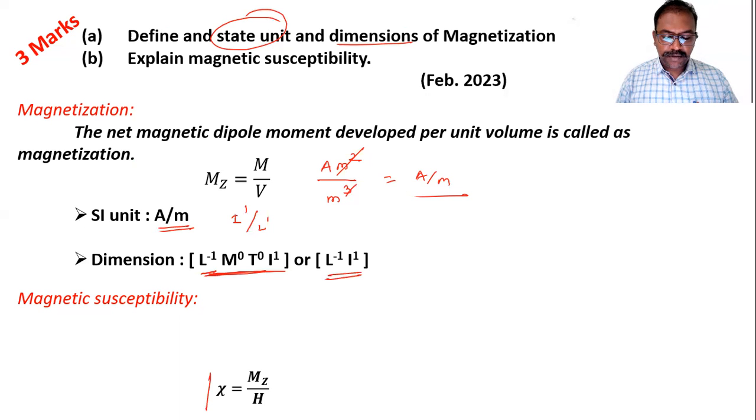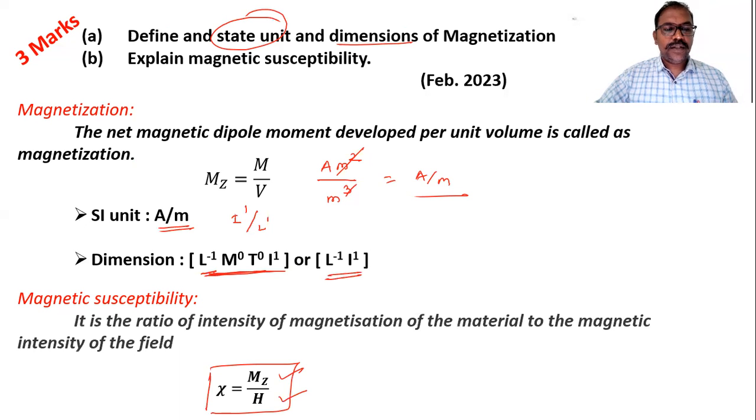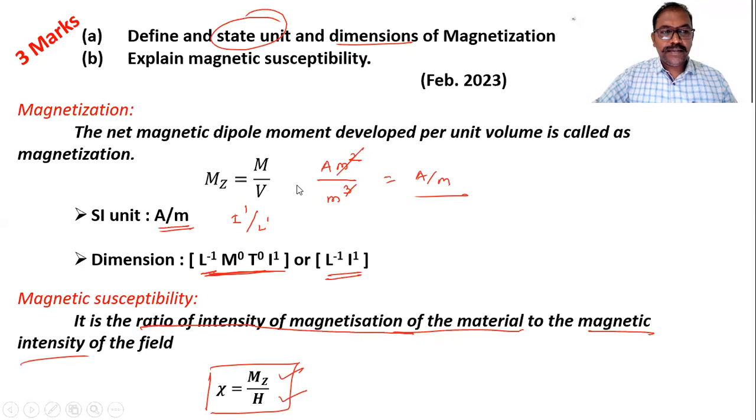The formula for magnetic susceptibility is magnetization divided by magnetic intensity. So you can write the ratio of magnetization to the magnetic field is called as magnetic susceptibility. You can see this: the ratio of intensity of magnetization of material to the magnetic intensity. So here we learn both the definitions, both the parts of this question.